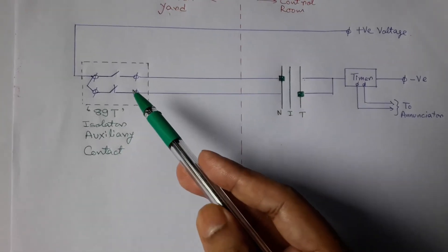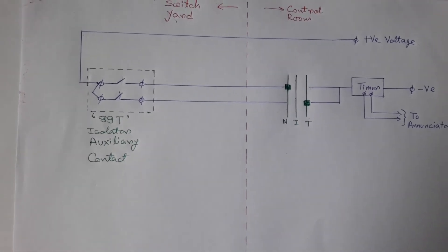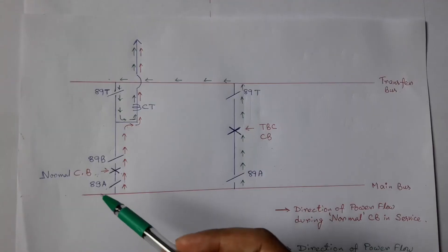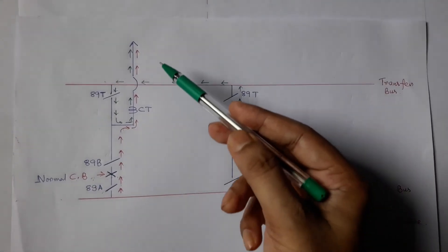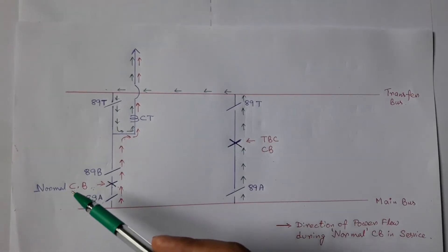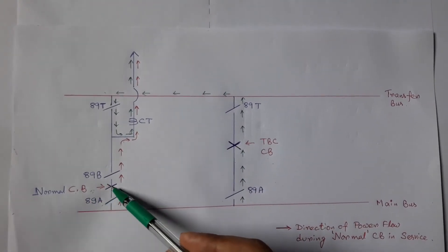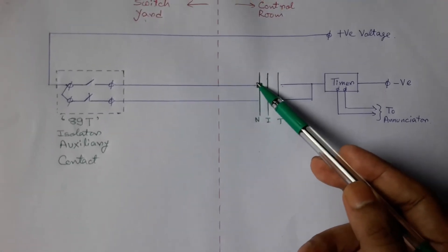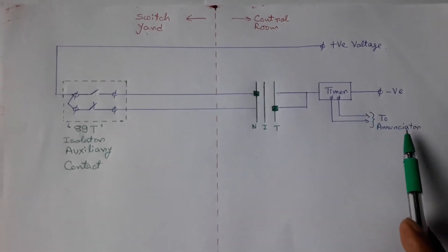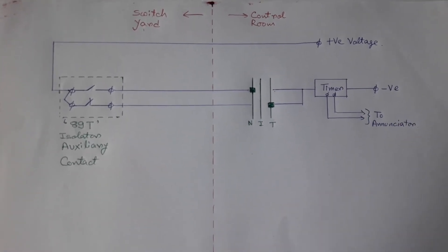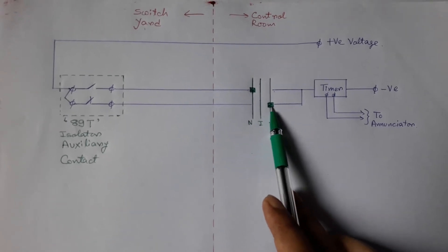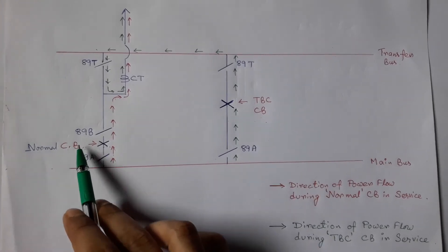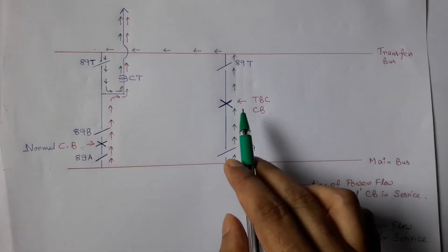The contact configuration of the auxiliary contact of the 89T isolator is as shown, and the positive voltage will appear at this terminal. But as the normal circuit breaker is in operation, during a fault in this line, our goal is to trip this circuit breaker only, not the TBC circuit breaker. So we will put this switch in normal position, but if accidentally we put this switch in transfer position, then there will be an audible annunciation.